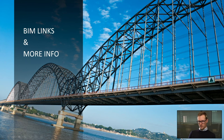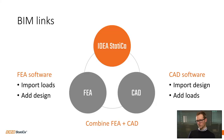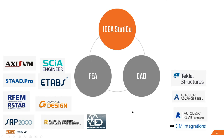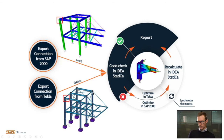Now jumping over to the BIM links — you can connect IDEA Statica to your existing software. The workflow is very good. Here is a list of compatible software: FEM-Design, Robot, SAP 2000, RFEM, STAD Pro, SOFiSTiK, and more. You can also connect to CAD software like Tekla Structures, Revit, and so on. The workflow is: you pick out the geometry from Tekla, put it into IDEA Statica, then take the loads from SAP 2000 and put those internal forces into IDEA Statica.